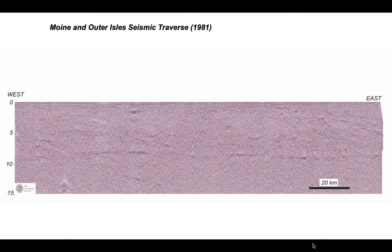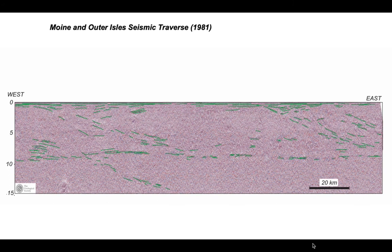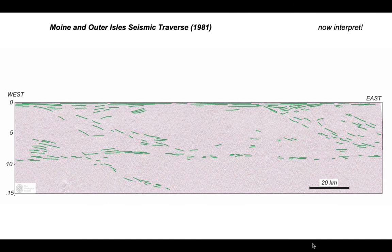Let's have a look at the MOIST profile. The scale here — that's a 20-kilometre horizontal scale bar — and the vertical scale is represented in two-way time from zero down to 15 seconds. In the 1980s, when faced with a profile like this, which is pretty noisy, the first thing to do is to create a line drawing, which brings out the most prominent reflectors.